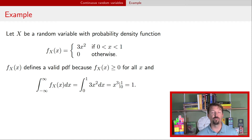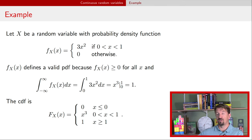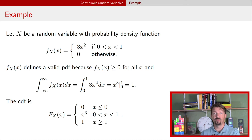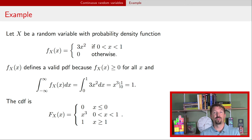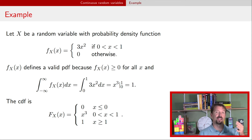This example provides a valid probability density function, and we can derive the CDF. The CDF is zero all the way up to zero, because there's no probability the random variable is less than zero. Between zero and one, we've already calculated the integral — it's x³. So between zero and one the CDF ramps up like x³. Above one, the CDF is just one. So it's a piecewise function: zero for x ≤ 0, x³ for 0 < x < 1, and one for x ≥ 1.